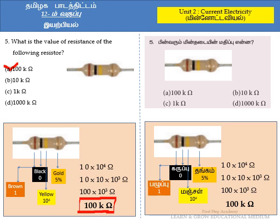Now we are going to discuss the same question in Tamil. The options are A) 100 kilo ohm, B) 10 kilo ohm, C) 1 kilo ohm, D) 1000 kilo ohm. We will find the same value. The color coding method discussed earlier applies here as well.